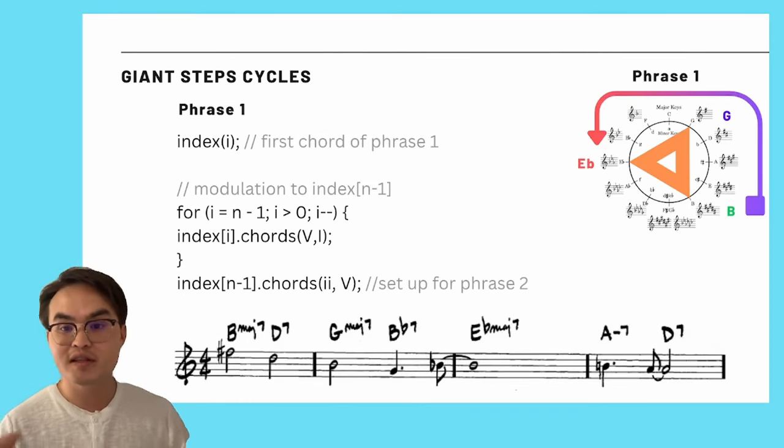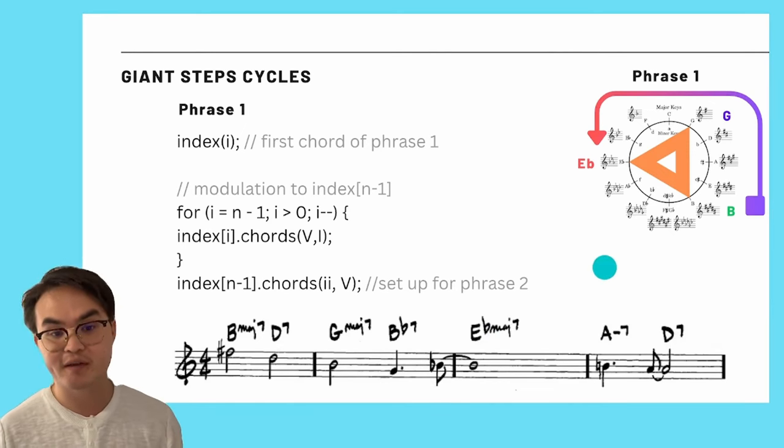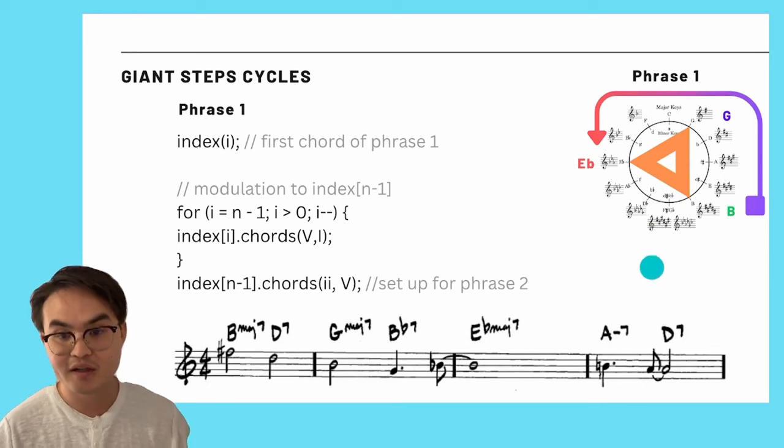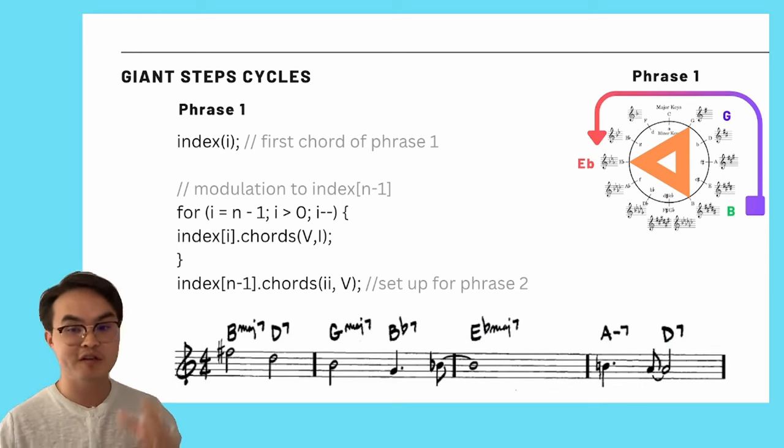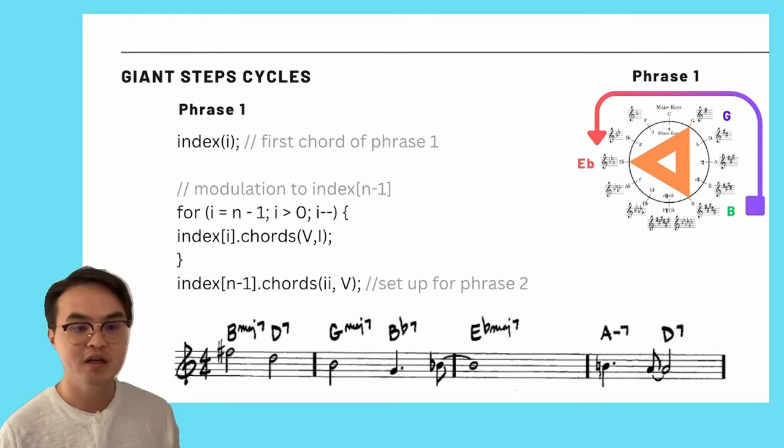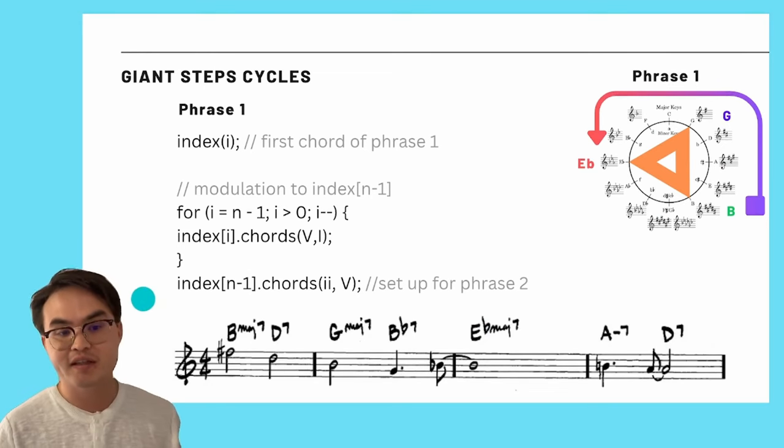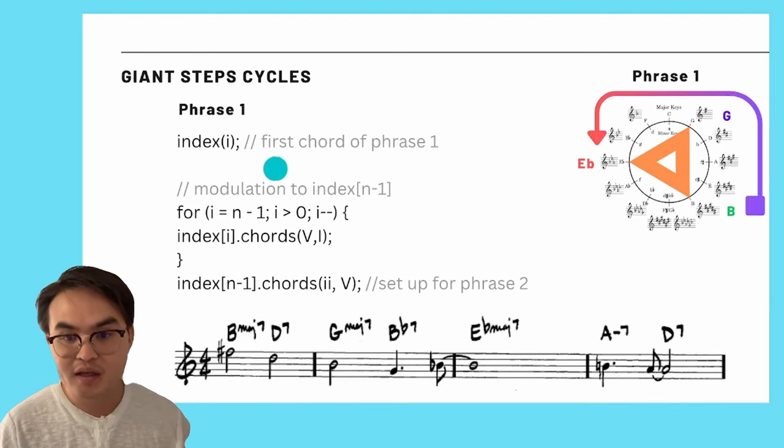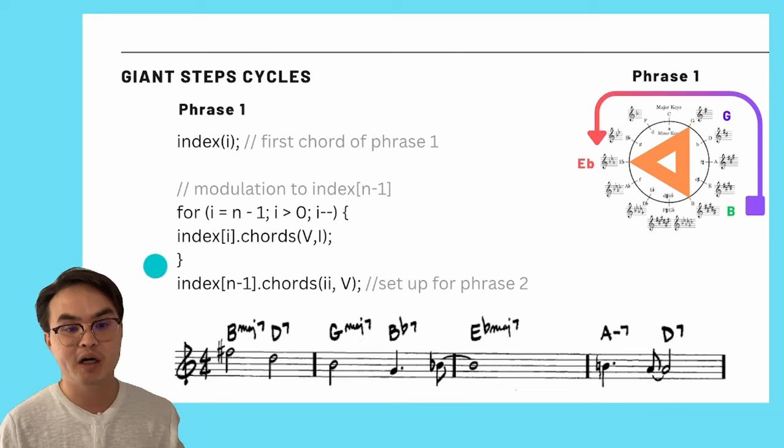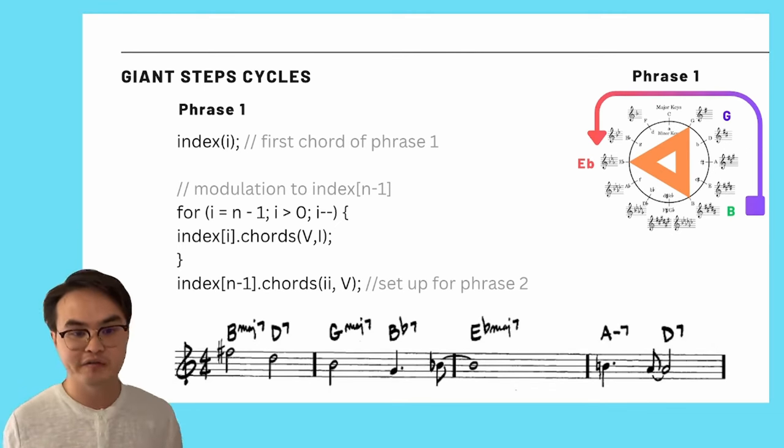And so using these three tools, we can express a pseudocode way of Giant Steps, in which regardless of if Giant Steps is cycling major thirds, minor thirds, fifths of an octave, infinity of an octave, as long as we plug in that n, we can express saying that Giant Steps begins with a first chord of phrase one, and then it modulates counterclockwise, which I've sort of written out here as a kind of for loop.